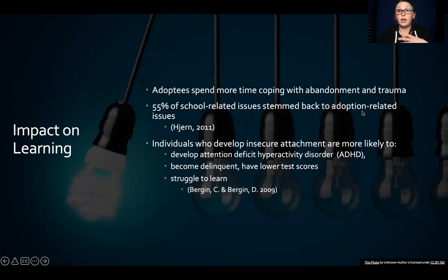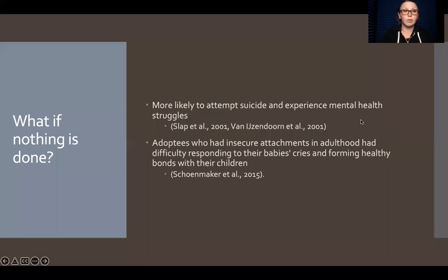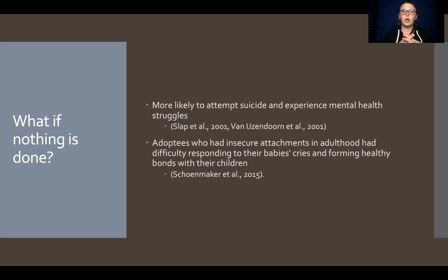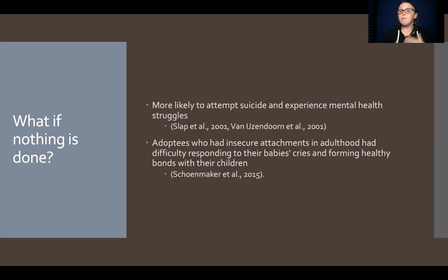When we don't account for these issues, it creates problems for the adoptee. If we do nothing, we're more likely to see adoptees attempt suicide and experience mental health struggles. Slap in 2001 and Bandura et al. in 2001 both found that adoptees are experiencing heightened issues — accessing mental health resources more often and more likely to attempt suicide. Additionally, adoptees who had insecure attachments had difficulty responding to their own children and forming healthy bonds in adulthood, creating ongoing relational and mental health struggles.